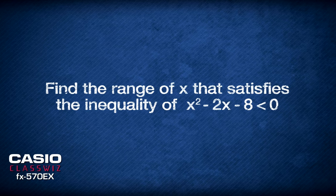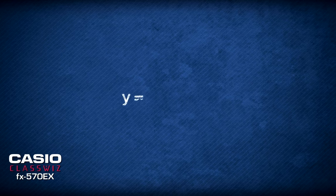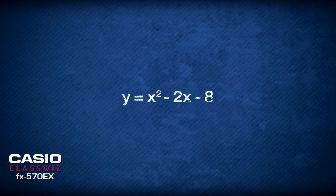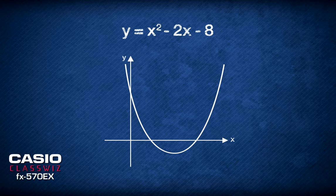Imagine the quadratic equation y equals x squared minus 2x minus 8. The range that satisfies this inequality are values of x that generate negative values of y.